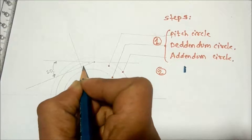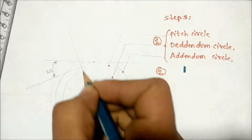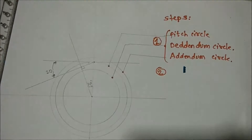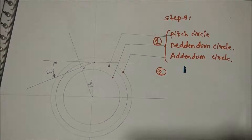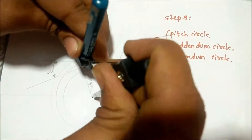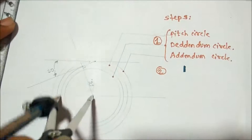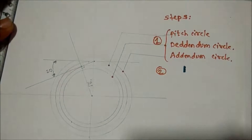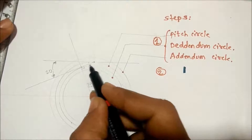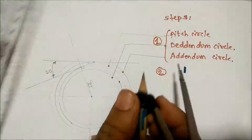The two lines intersect each other, and at that intersection point we get the tangent point. Take a radius from the center to that tangent point and draw a circle. This circle is called the base circle.